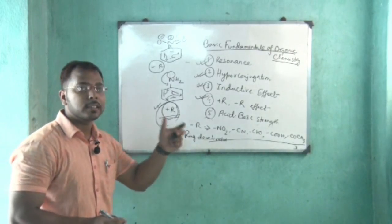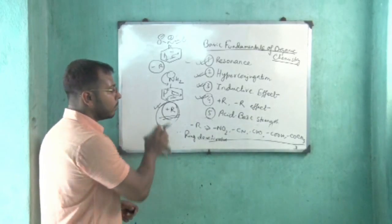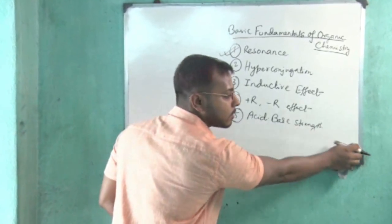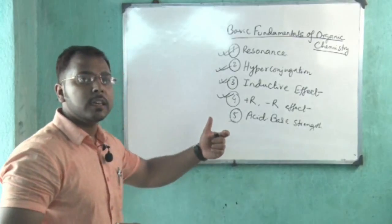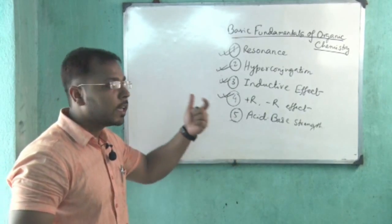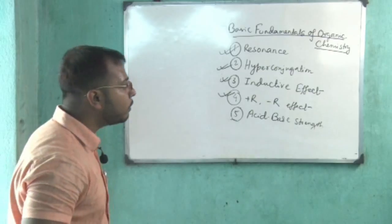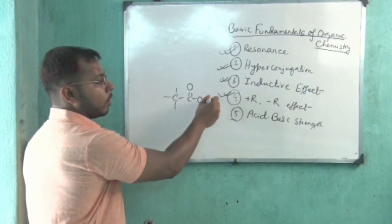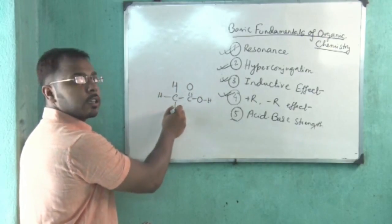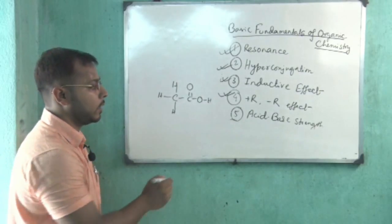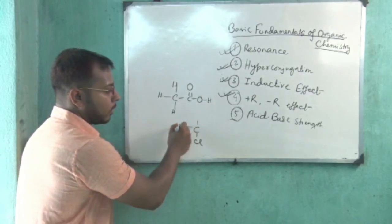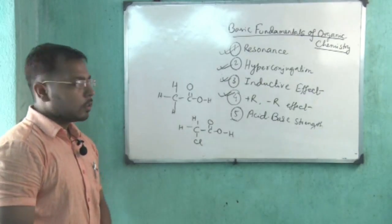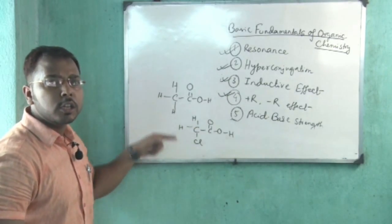Now come to organic acid-base strength. We need to remember: plus I effect and plus R effect increase basicity, while minus I effect and minus R effect increase acidity. To prove this, consider acetic acid (ethanoic acid) as compound 1, and monochloroacetic acid as compound 2. We need to compare their acidity.